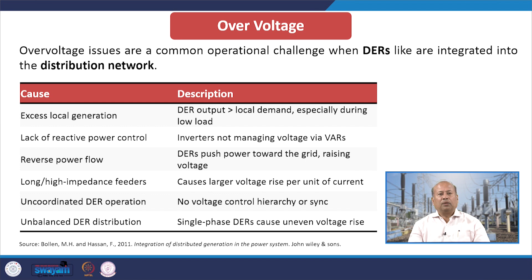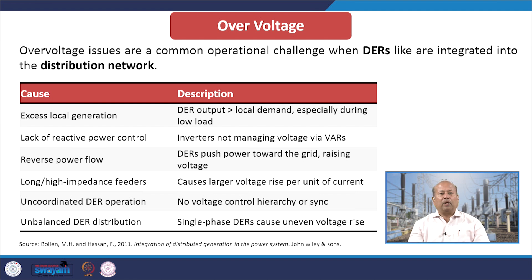Moving to over voltage: over voltage issues are a common operational challenge when DERs are integrated into the distribution network. The causes include excess local generation where DER output is much more than local demand especially during low load conditions, lack of reactive power control due to inverters not managing voltage via VARs, reverse power flow where DERs push power towards the grid raising voltage, and long high impedance feeders causing larger voltage rise per unit of current. Uncoordinated DER operation with no voltage control hierarchy or synchronization is also a cause.